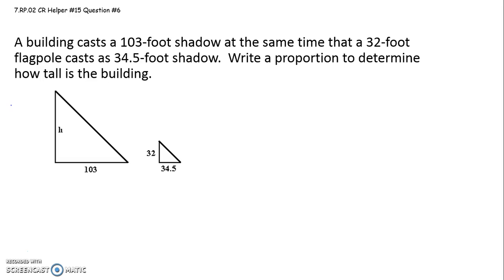Okay, and they give us a beautiful picture. So h is the height of the building, it's casting this 103-foot shadow. Then at the same exact time of day, you got this little flagpole casting a 34.5-foot shadow. These are similar figures.